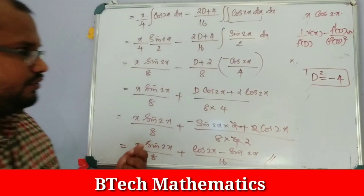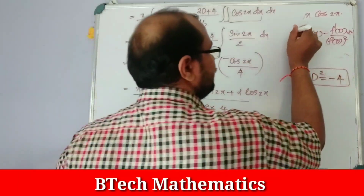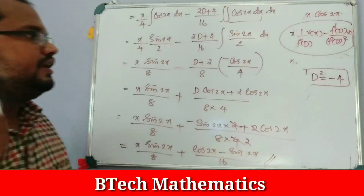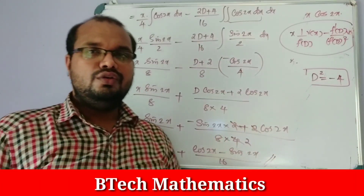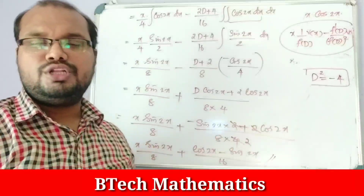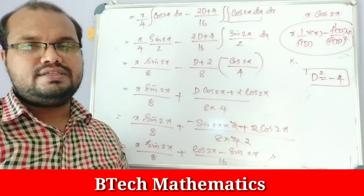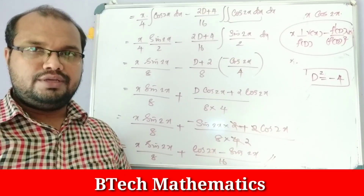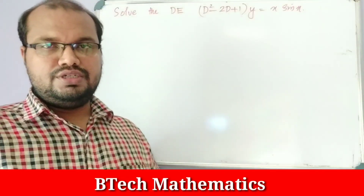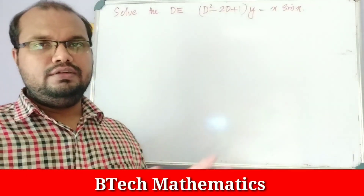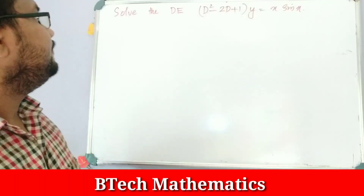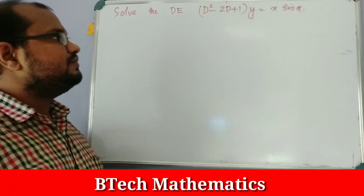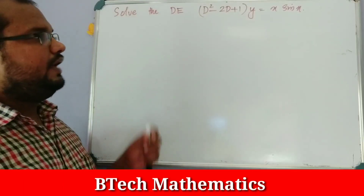Today we have found this method: PI = x · [1/f(D)] · v(x) minus [f'(D)/f(D)²] · v(x). We have another question for a university exam: solve the differential equation (D² − 2D + 1)y = x·sin(x).